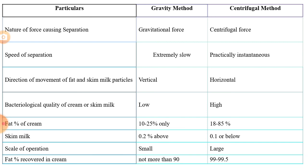There are some factors responsible for the fat percentage of cream in the centrifugal method: speed of machine, temperature of milk, rate of milk inflow, amount of flushing water, and formation of separator slime. These factors will be discussed further in the next point of common dairy processes.